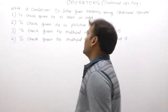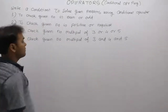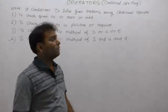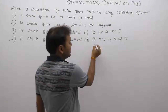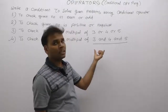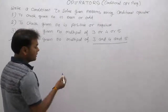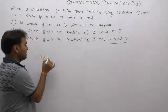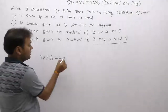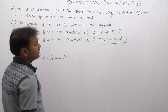Write a condition to solve given problems using conditional operator. The first problem is to check if a given number is a multiple of three and four and five. A runtime number that is a multiple of three, four, and five — all three — then yes, otherwise no. Using the conditional operator: if number modulo by three gives remainder zero, the number is a multiple of three, otherwise not a multiple. Same logic applies for four.